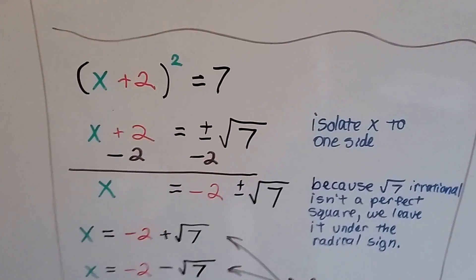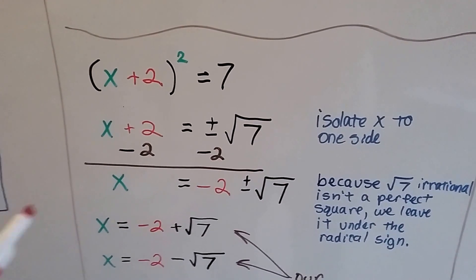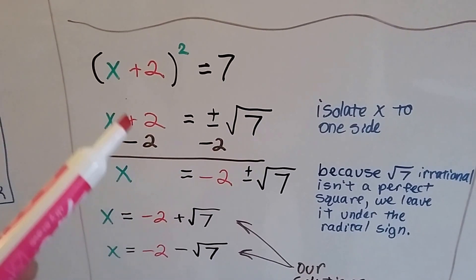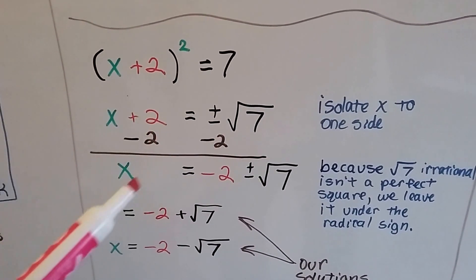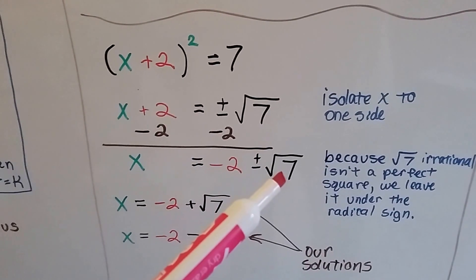Let's try this one. This is a binomial square of x plus 2 squared equals 7. And we want to isolate the x, so we take away 2 from each side of this equation. This becomes a zero pair. So now we have x equals negative 2 plus or minus square root of 7.